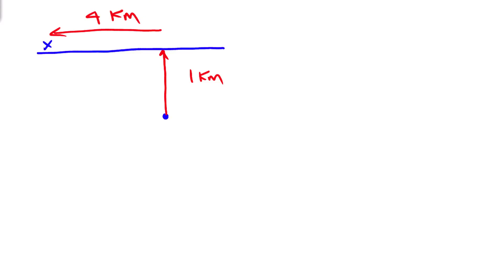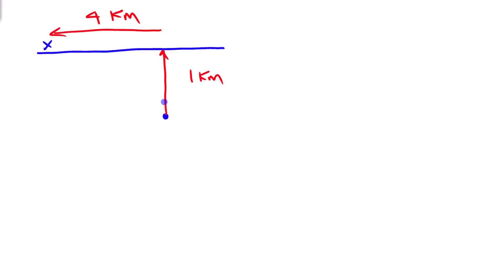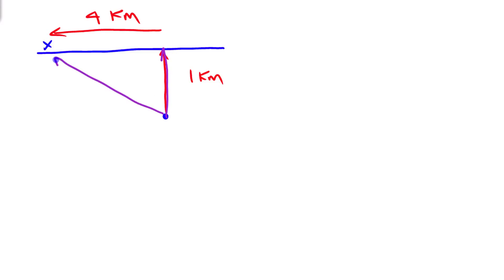I can do a variety of things here: go straight to the shore, go straight to my destination, or go anywhere in between. What I want to do again is minimize the time it takes. If I go straight to the shore and along the shore it's slow — I'm doing a lot of walking. If I go straight to the destination, I row slower than I walk so it's going to take time. Somewhere in between is an optimum place to land that minimizes the combination of rowing and walking.